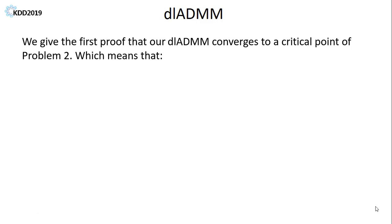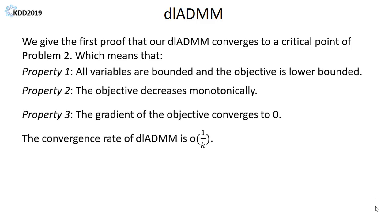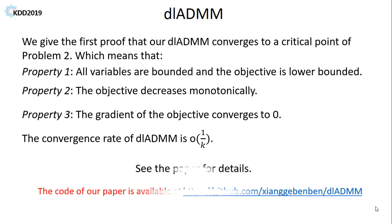Finally, we give the first proof that the DL-ADMM method is guaranteed to converge to a critical point of problem 2, which means three properties. The convergence rate of our DL-ADMM is O(1/k), where k is the number of iterations. You are welcome to check our paper for theoretical details.